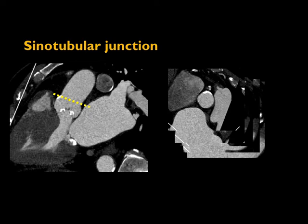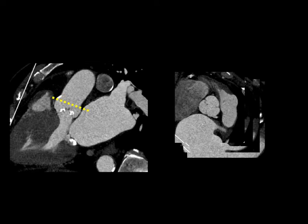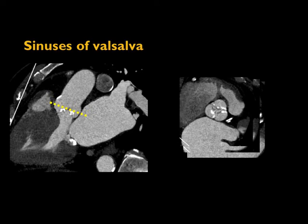Here's a stack of images through this region from short-axis plane reformats to give a sense of the anatomy. Starting high at the sinotubular junction, you get a nice round appearance above the right coronary artery origin. Stepping forward into the sinuses, you see the left coronary artery origin posteriorly at about the five o'clock position. A little lower, we're at the midpoint of the sinuses of Valsalva where the sinuses are at their largest.